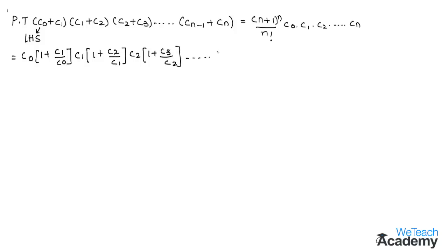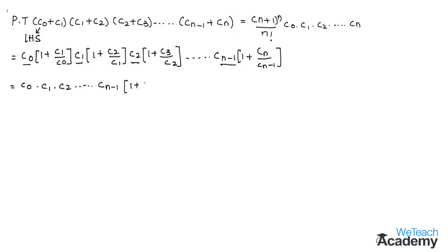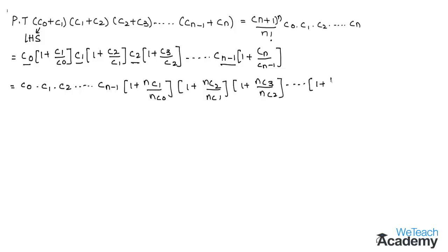Coming to the nth term, taking cn-1 as a common factor we get cn-1 into (1 + cn/cn-1). Grouping all these terms we get c0 into c1 into c2 ... cn-1 into (1 + nC1/nC0) into (1 + nC2/nC1) into (1 + nC3/nC2) ... into (1 + nCn/nCn-1).